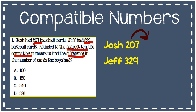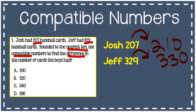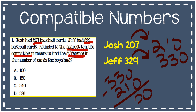207 rounded to the nearest ten is 210. 329 rounded to the nearest ten is 330. I'm supposed to find the difference, so 330 minus 210. When I subtract them, I get a difference of 120. And I used compatible numbers to get that answer.